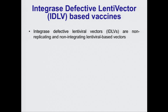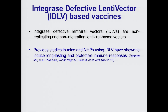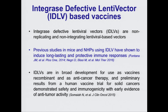Integrase defective lentiviral vectors are non-replicating and non-integrating lentiviral-based vectors, and previous studies in mice and non-human primates using IDLV have shown them to induce long-lasting and protective immune responses. IDLV are currently in broad development for use as vaccine regimens and as anti-cancer therapy, and preliminary results from a human vaccine trial for solid cancer demonstrated safety and immunogenicity with some early evidence of anti-tumor activity.